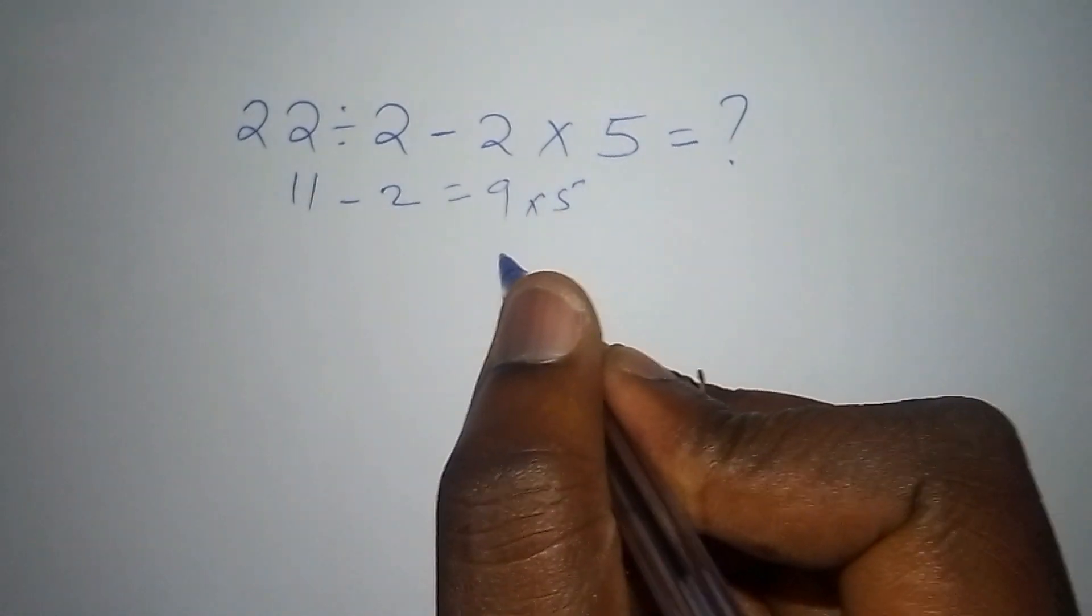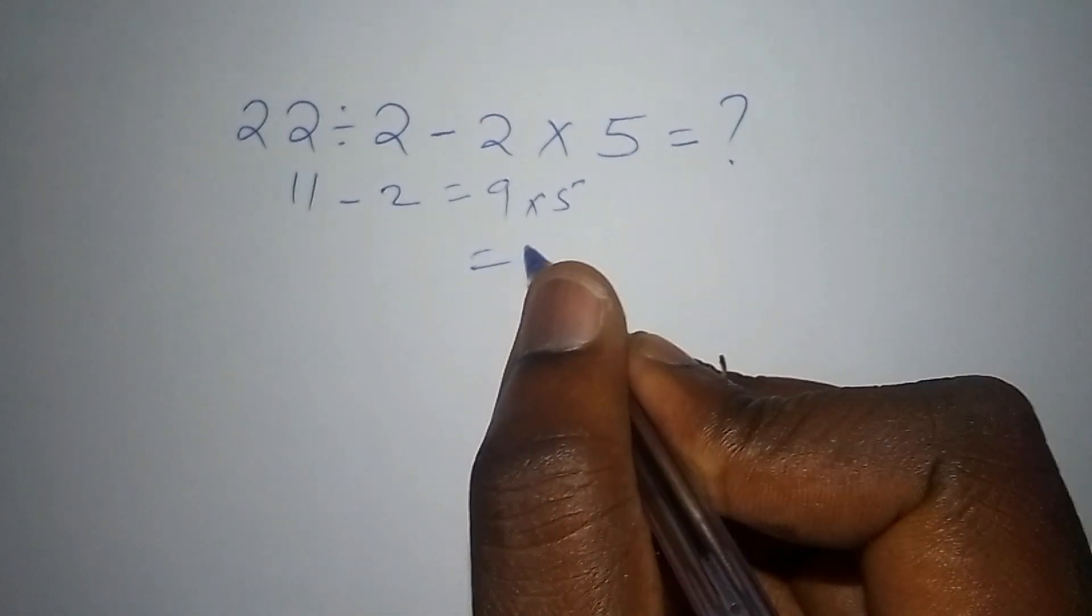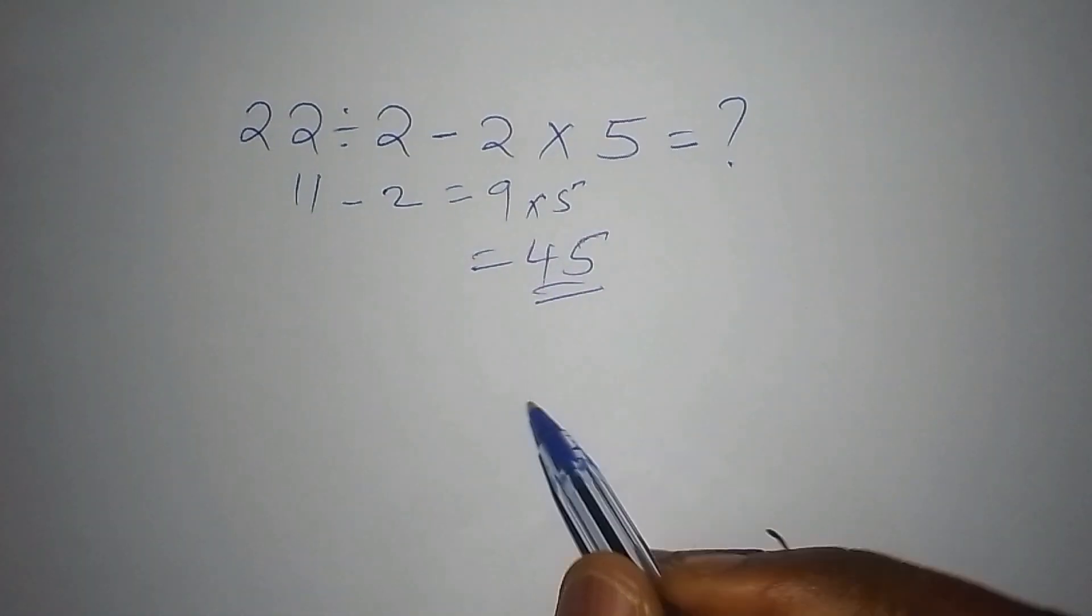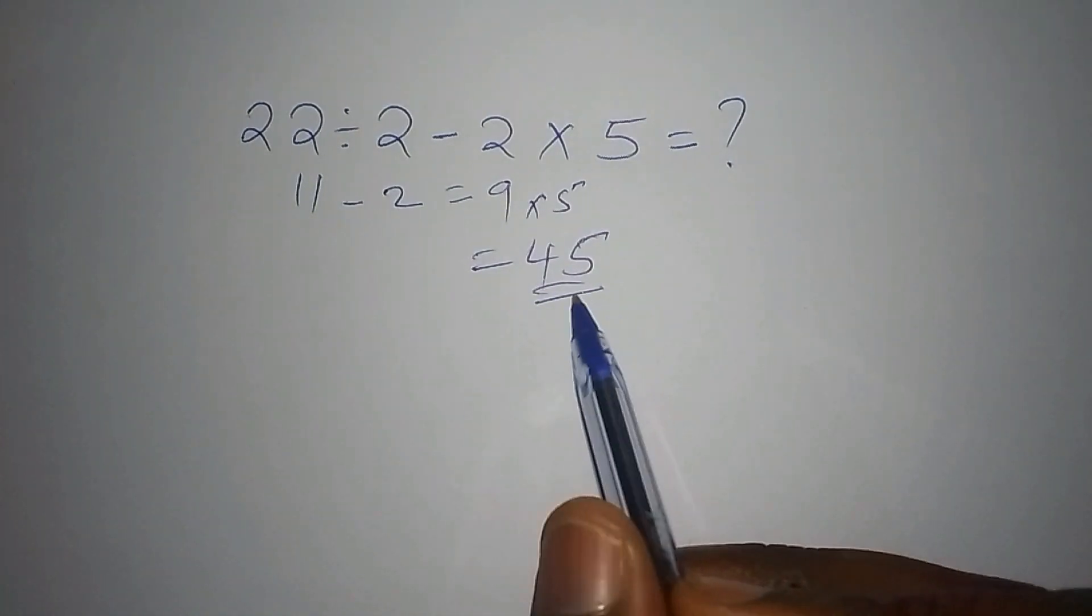So after getting this 9, then finally they multiply by 5 and they say now our final answer is 9 times 5 which is 45. Now if you happen to follow this step, you shall end up with an answer that is not correct.